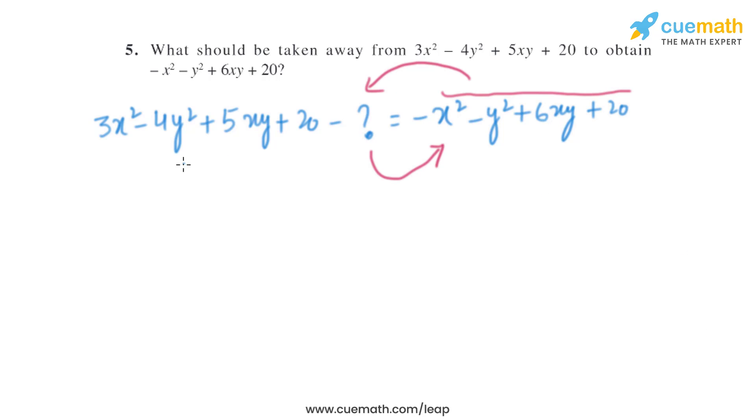Now let's have a look at what will happen. So when we transpose that entire term to the left side, it will become 3x² - 4y² + 5xy + 20, and that will become plus x² + y² - 6xy - 20.